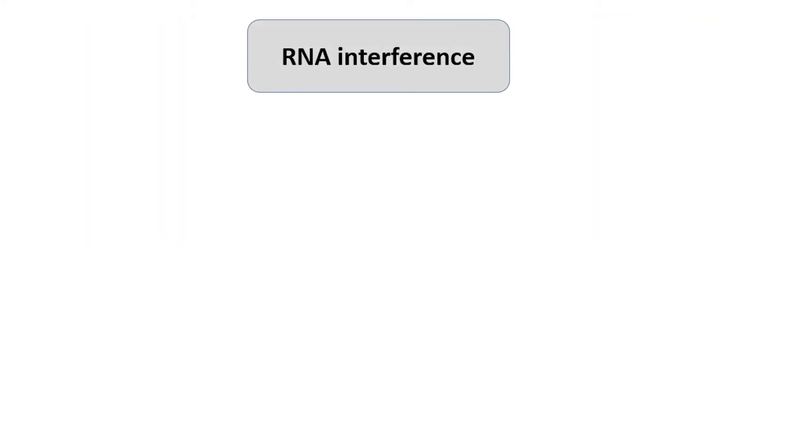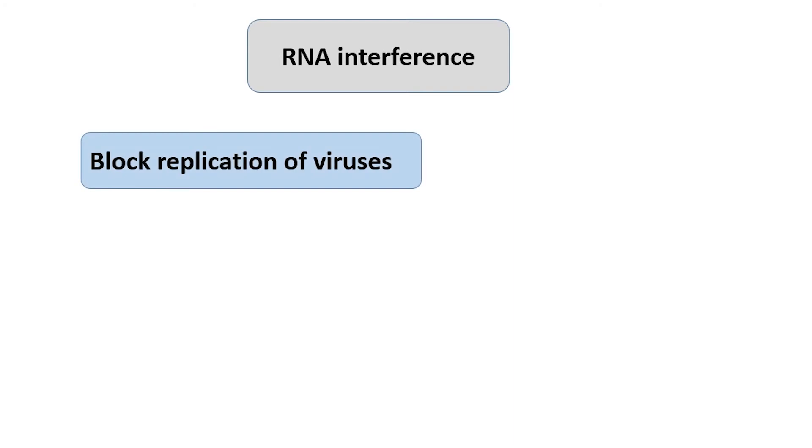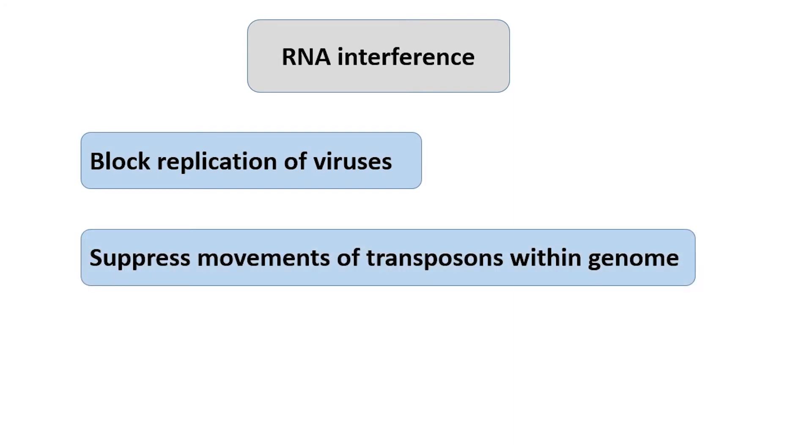In cells, this mechanism evolved to block replication of viruses and also to suppress movements of transposons within the genome. We have seen that cells recognize double-stranded RNA molecules as undesirable, as they are not produced by normal cellular activities, and hence mark them for degradation. Thank you.